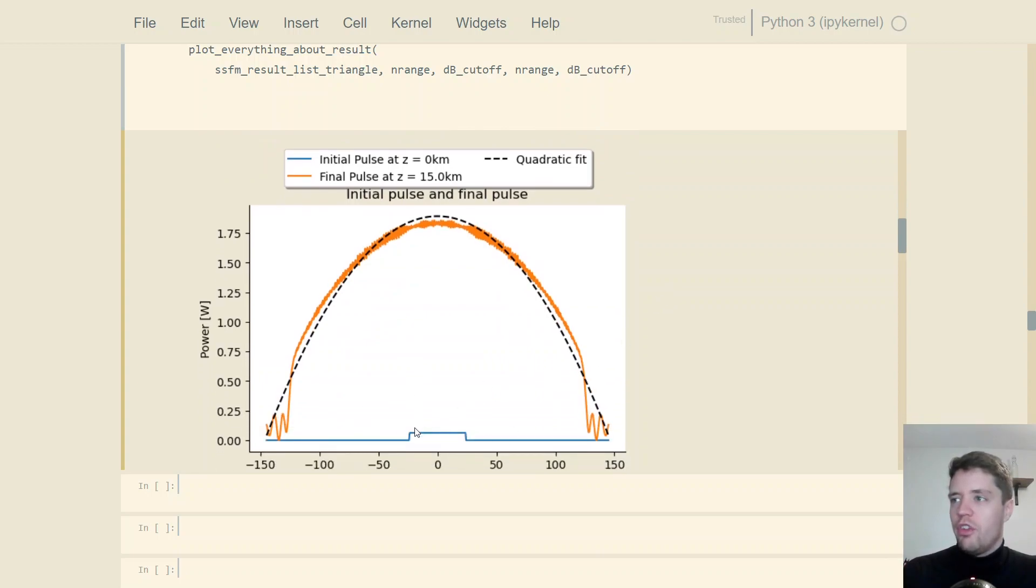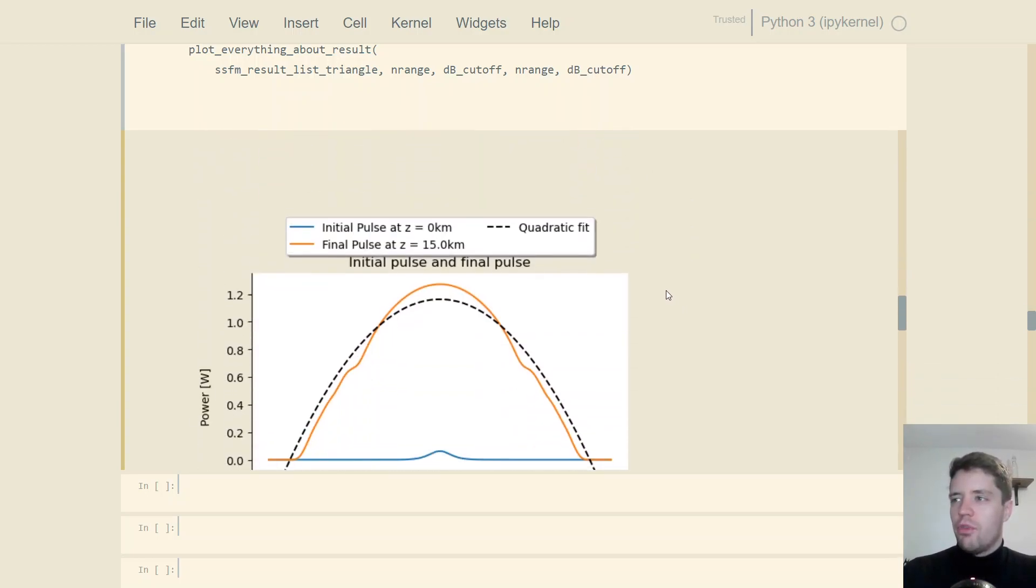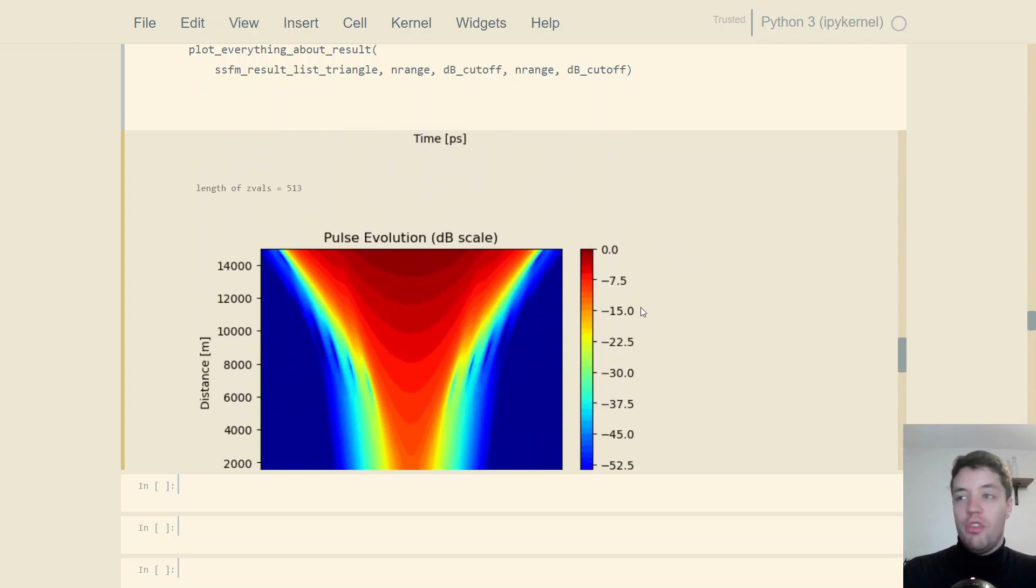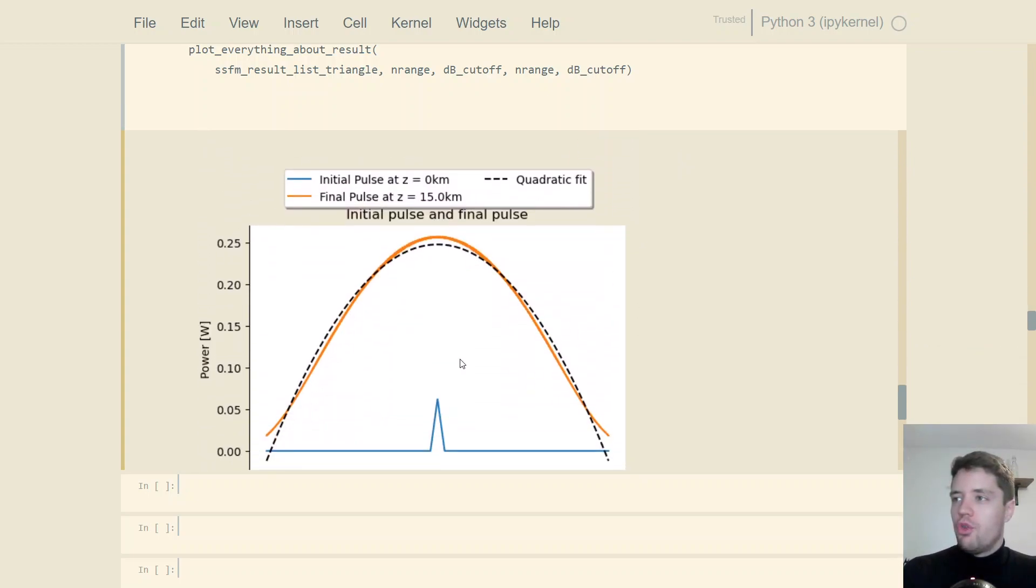But what's interesting is that that parabolic shape doesn't just arise for the Gaussian, it also arises for the square pulse, as you can see here. We start off with this very solid rigid square pulse, and then in the end we get something that very much looks like a parabola, apart from a little bit of optical wave breaking taking place here at the edges of the pulse. And as a matter of fact, the same thing happens for the hyperbolic secant pulse right here, with still a bit of optical wave breaking. And finally we see the same thing again for the triangular pulse right here.